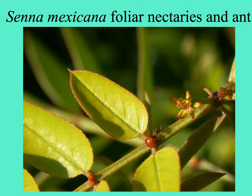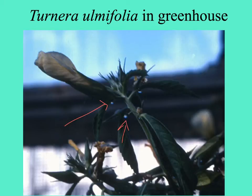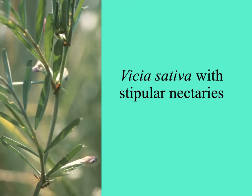Here's Senna mexicana variety Chapmanii with a tiny ant and its big red nectary. Here's a Turnera plant in a greenhouse, protected from insects, with nectar accumulating in large droplets. The common vetch grows as a weed in California but is native in England; here an ant visits a nectary on the stipule, near where flowers also develop. It turns out these ants protect the plants from pod-dwelling insects.